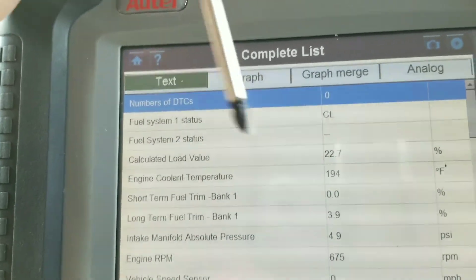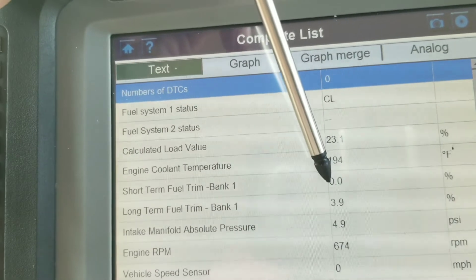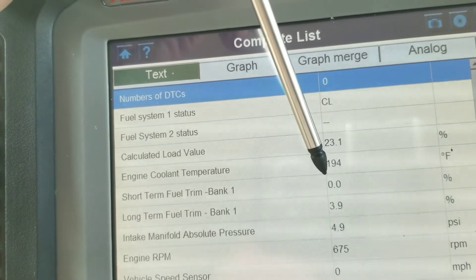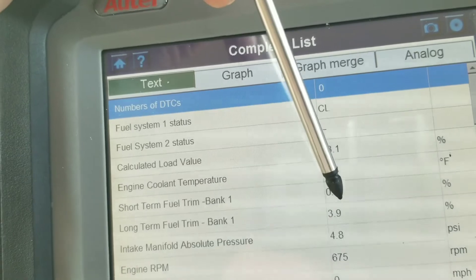So anytime you see your long term and short term fuel trim, you see right here short term fuel trims at zero, long terms at 3.9.